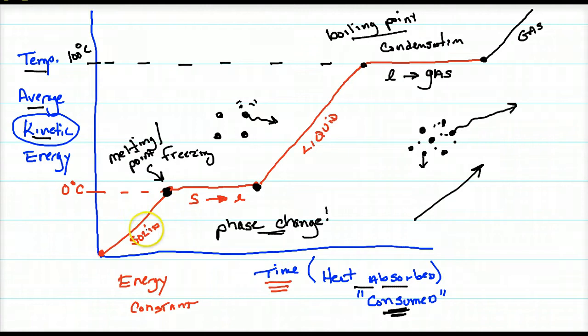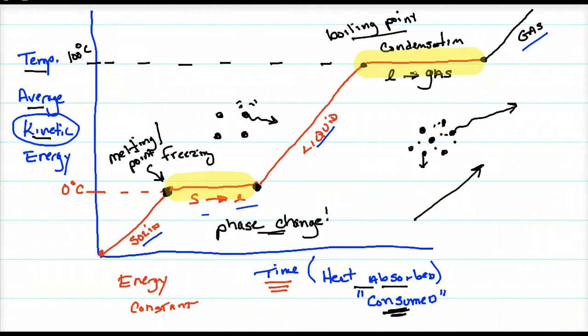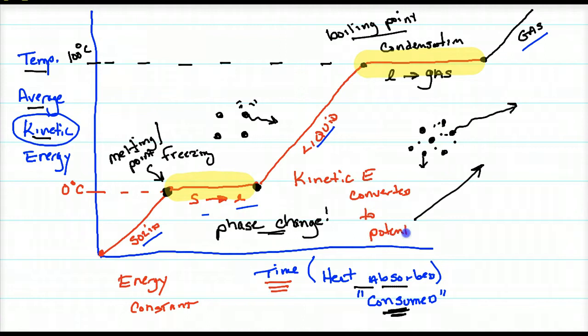Let's talk about kinetic energy. Clearly, kinetic energy goes up when you have a pure phase, because as you add energy to a pure phase it vibrates more. The flattening-out periods — the phase changes — do not show any kinetic energy increases. The energy being taken in is consumed to separate molecules, not to vibrate them more. Another way to say this: kinetic energy is being converted to potential energy.